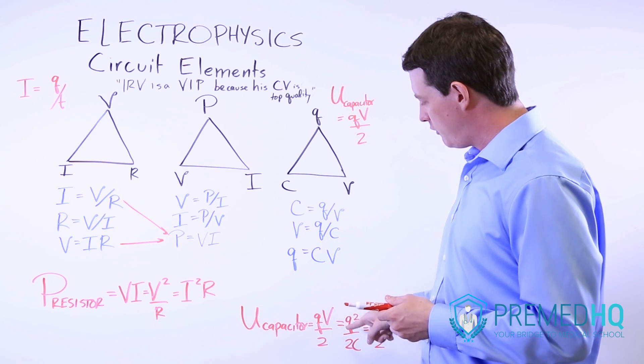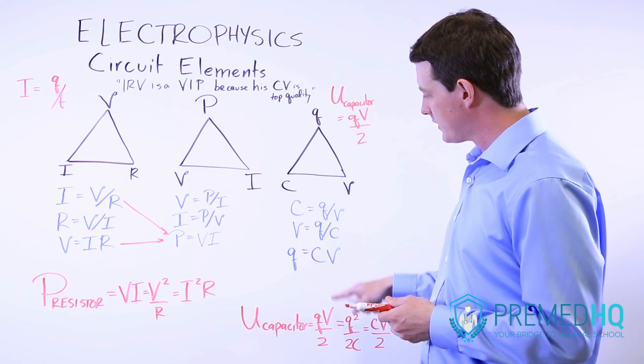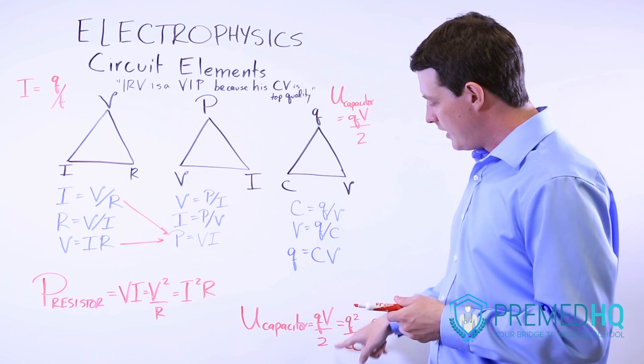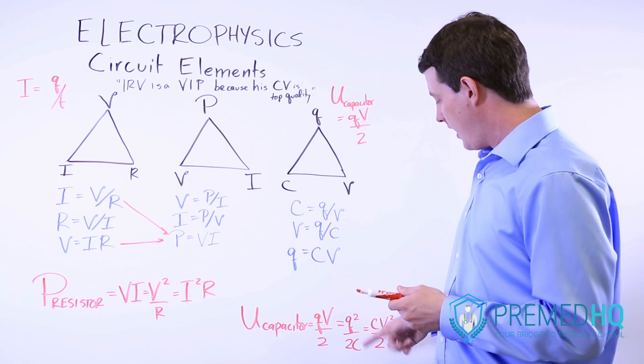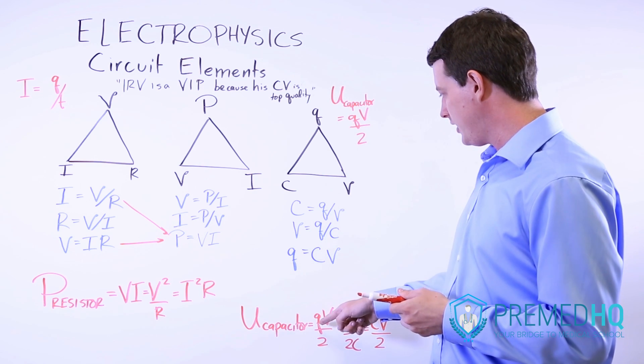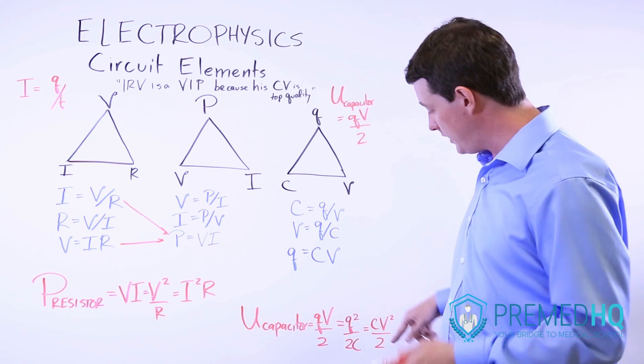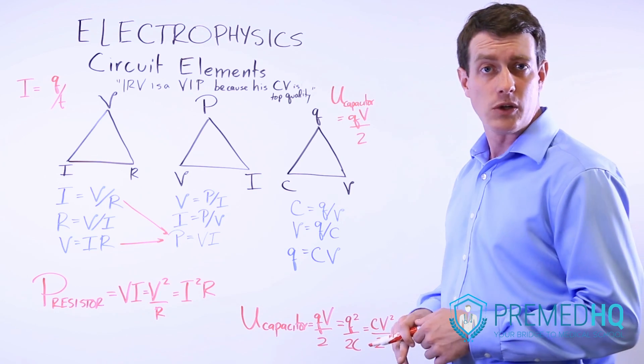And if you substitute out V, for example, V is Q over C, then you'll end up with Q squared over two C. And if you, instead of Q here, if you replace that with CV, then what you'll have is CV squared divided by two.